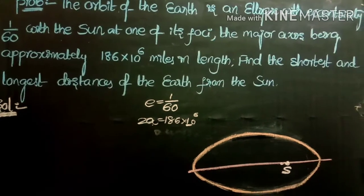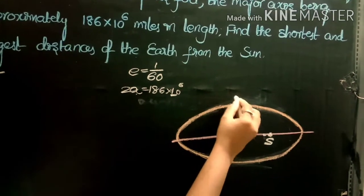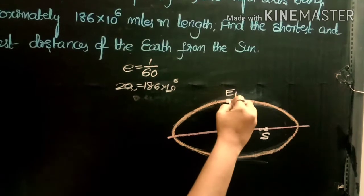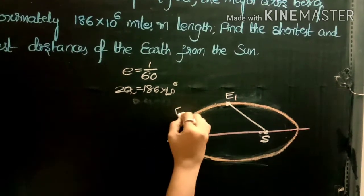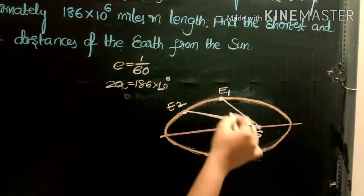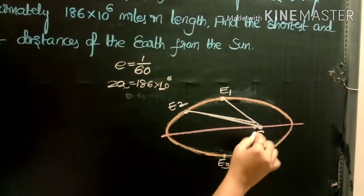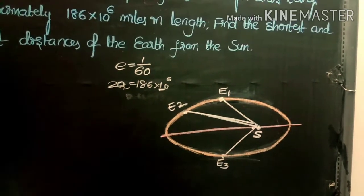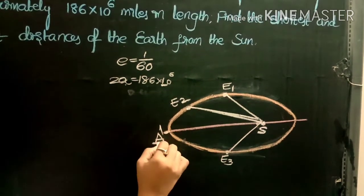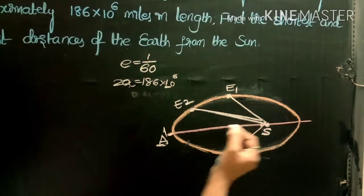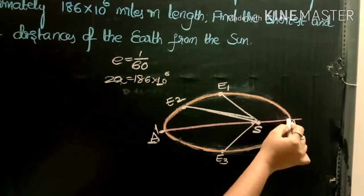We need to find the shortest and longest distances of the earth from the sun. As the earth rotates in the orbit, it takes various positions E1, E2, E3, E', E, with corresponding distances SE1, SE2, SE3, SE', SE from the sun S.